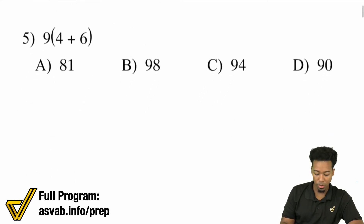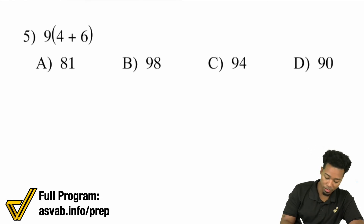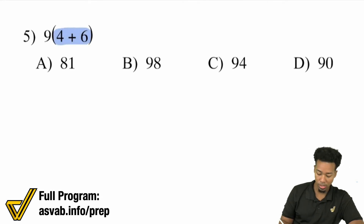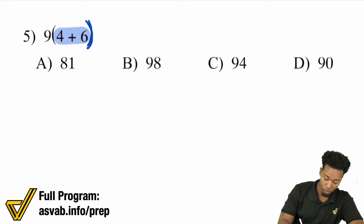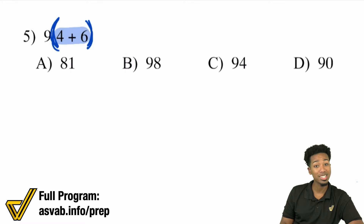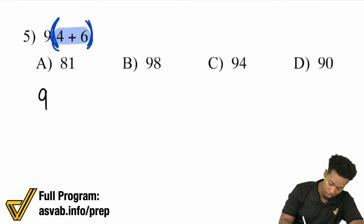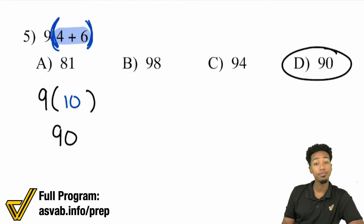Understanding your order of operations is going to be the most important thing. Here's another one: 9 times (4 plus 6). Yes, it's 9 times, but we have a group here — 4 plus 6 inside parentheses. So remember: parentheses comes first. You do whatever is inside the parentheses first. 4 plus 6 is 10, so this becomes 9 times 10, which is going to be 90. And that is choice D.